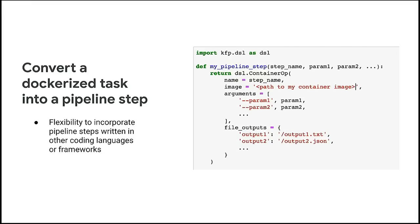In its simplest form, because we're orchestrating containers, as long as the containers follow a protocol on how they accept inputs and produce outputs, any containerized task can be converted into a workflow step. In fact, we have a customer that has taken Fortran libraries that do numerical analysis, put them in a container, and called that container as a task in a Kubeflow workflow. The way you do that is by defining a Python function wrapper using the SDK function called container ops.